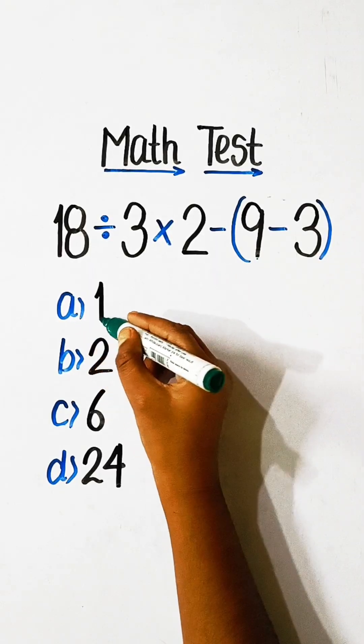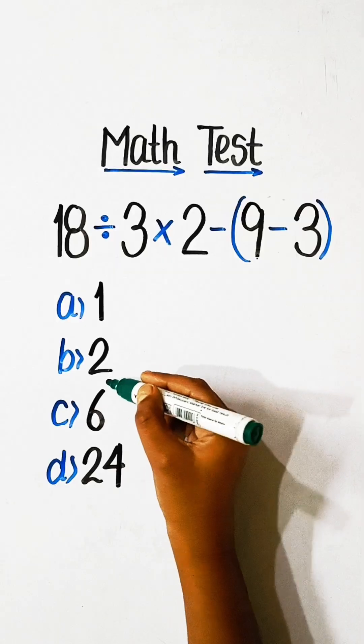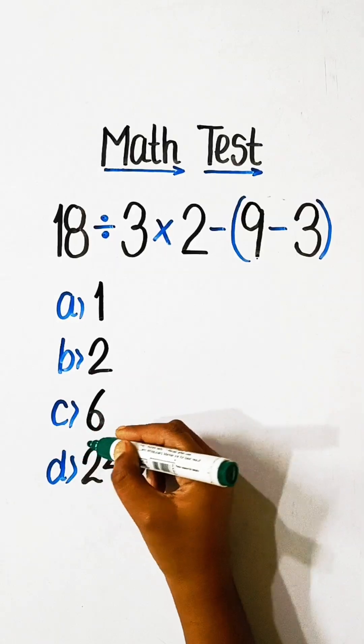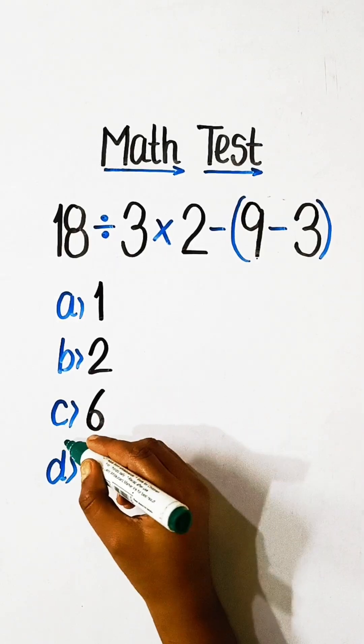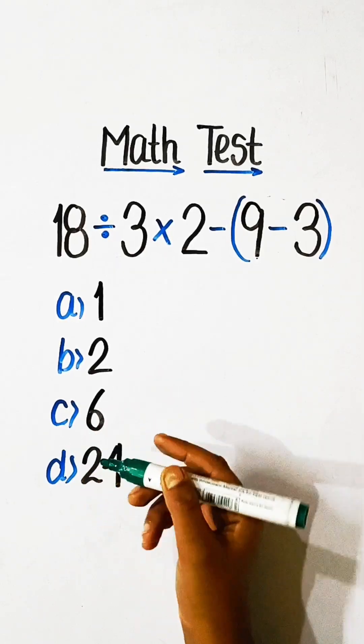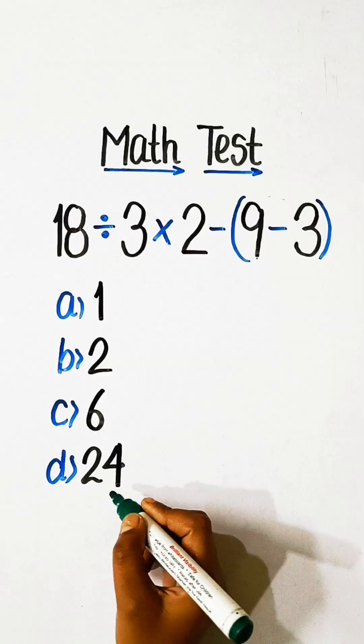Option A: 1. Option B: 2. Option C: 6. Option D: 24.